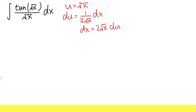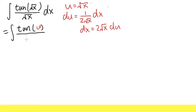Taking this to the u-world, we have the integral of tangent with input u, and the denominator we can write as u, but let me purposely keep this as square root of x — because dx becomes 2 square root of x du. If you write the denominator as u, you'd write that as u as well, but either way they cancel each other out.